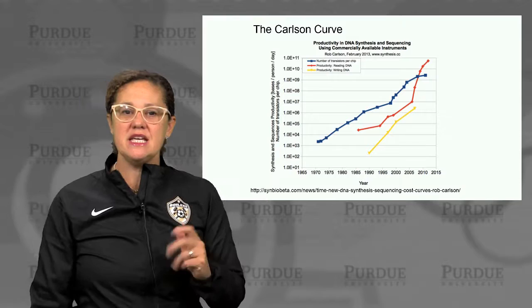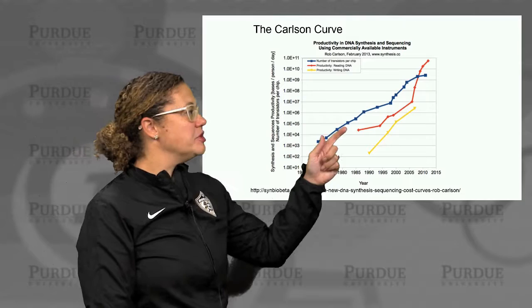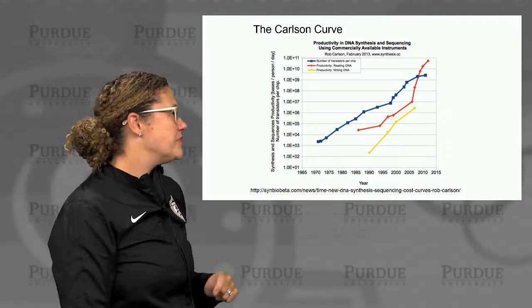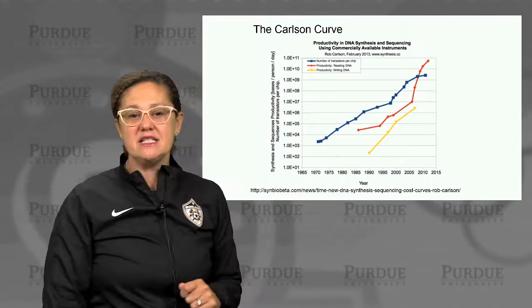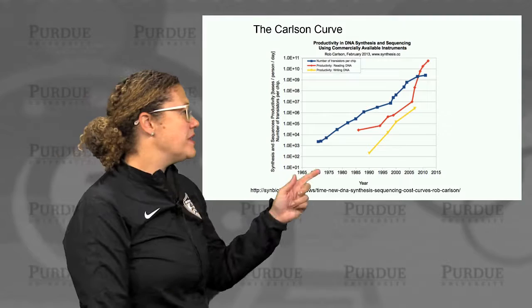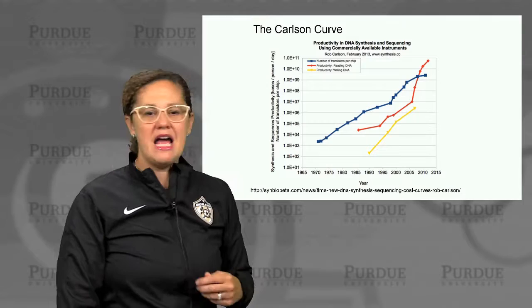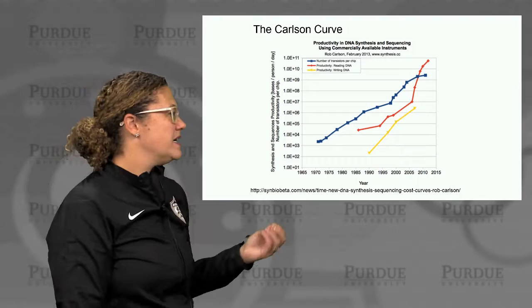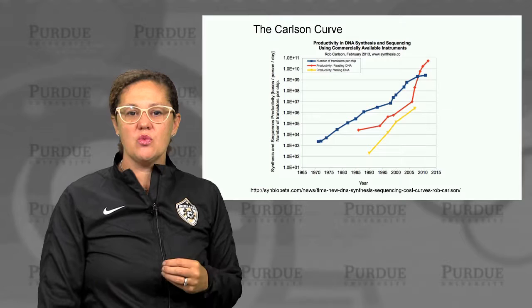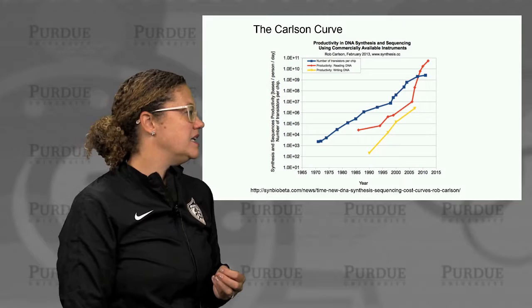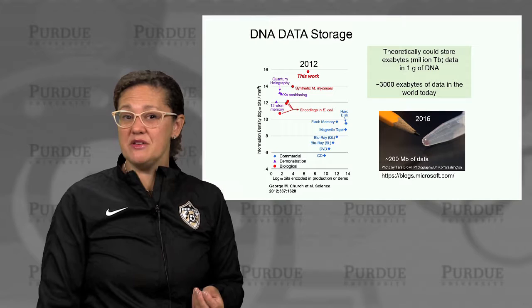There is a now somewhat famous curve called the Carlson curve, which is the DNA equivalent of Moore's law. Moore's law in blue shows the number of transistors per chip over time. The biological equivalent — the Carlson curve — shows in red the reading of DNA and in yellow the writing of DNA, plotted as synthesis and sequencing productivity: how many bases per person per day can be read or written over time. It's been growing quite steeply and even accelerating for reading DNA, driving much of the innovation in biological engineering today.